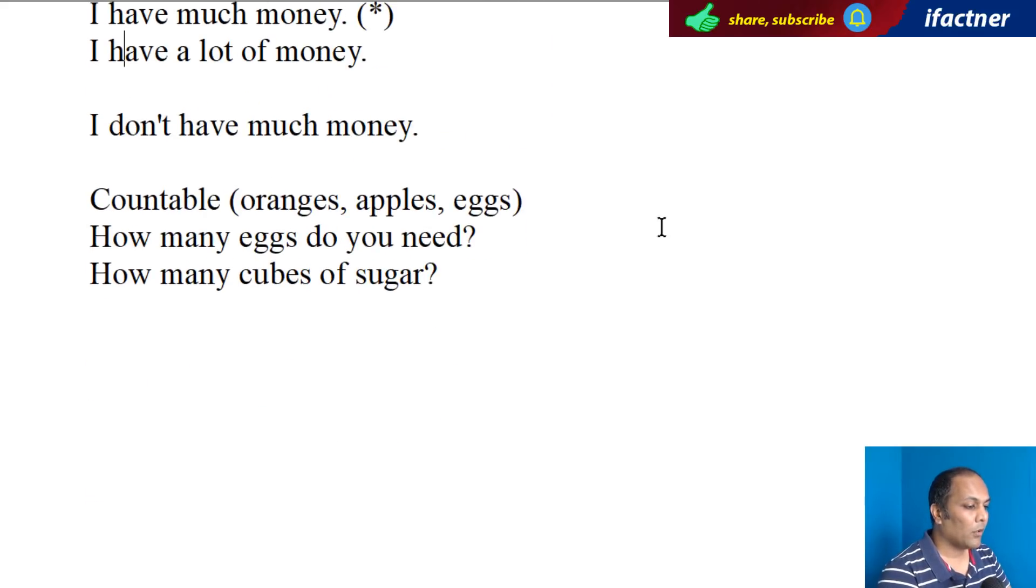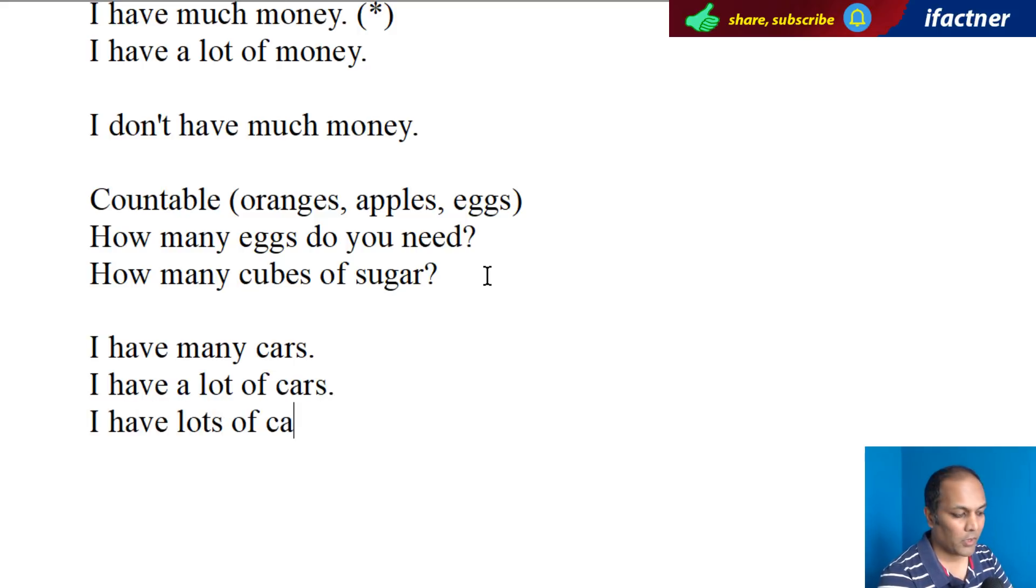Ab dekhay, countable ki form mein, aap a lot of use karay hai, ya phir, aap many use kar lay, koi masla nahi hai. Nisa, mein yeh kehun ga, I have many cars. Ab gaariyaan ginni ja sakte hain, isliya mein nae many use kiya hai. Yeh si cheez ko amissa bhi kaya sakte hain. I have a lot of cars. I have lots of cars. Toh, in teeno joo sentences in ka jumna, matlab, thik hai.